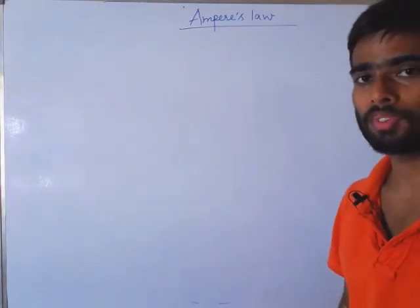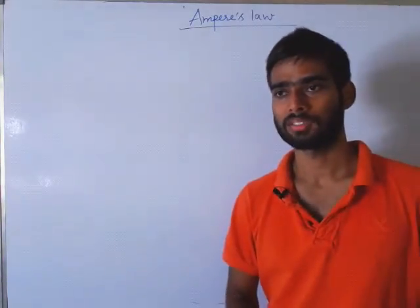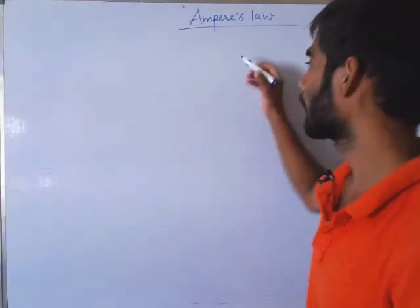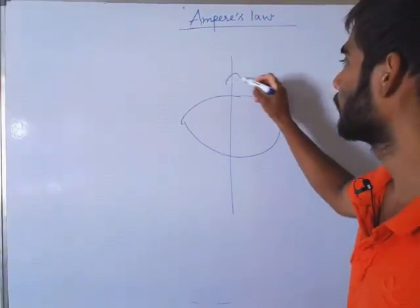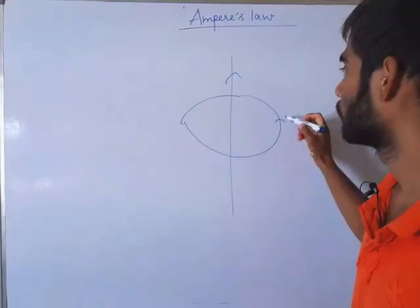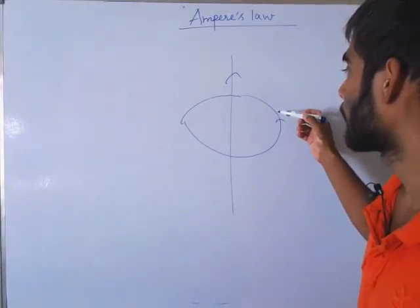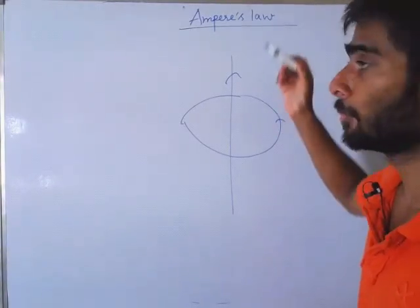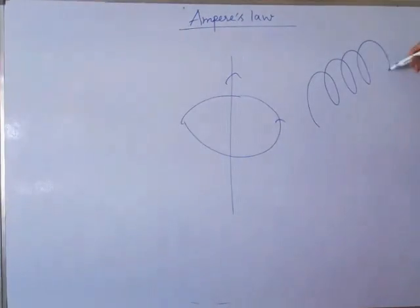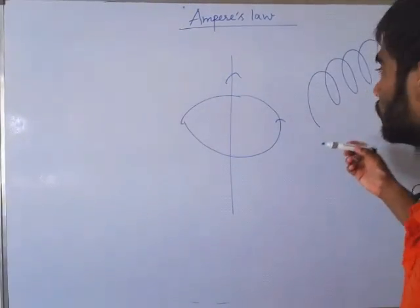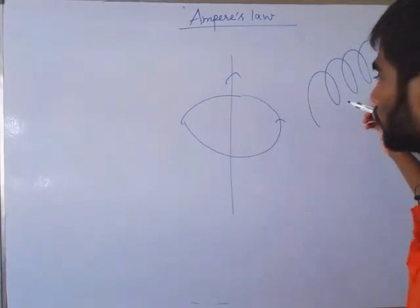Ampere's law is used to find the magnetic field. Suppose a current carrying conductor is there. We know that the current carrying conductor has a magnetic effect. We will find this magnetic field with the help of Ampere's law only. We have windings in the transformer machines, which is a solenoid. Winding is also called solenoid.